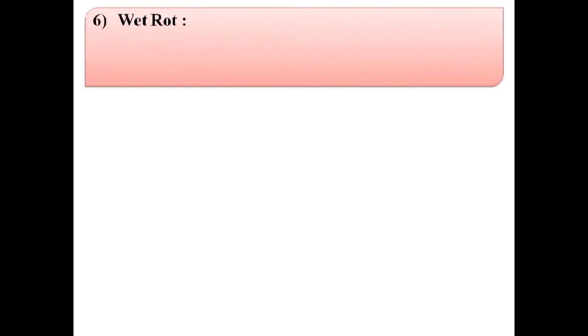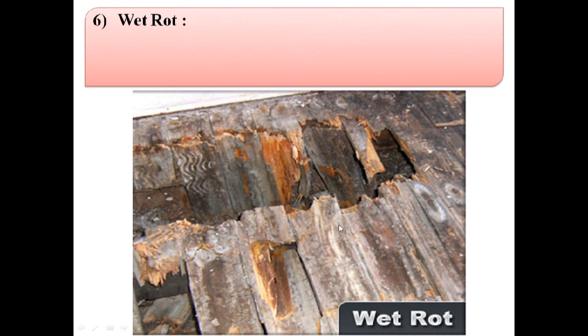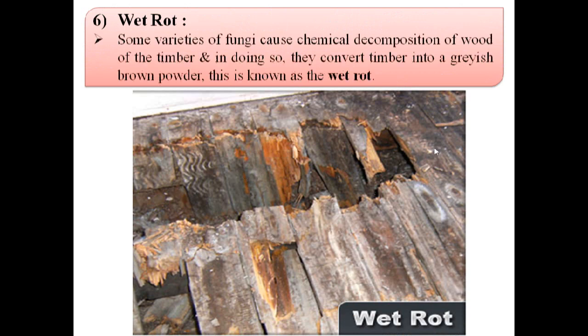Next defect due to fungi is wet rot. Some varieties of fungi cause chemical decomposition of wood of the timber and in doing so they convert timber into a greyish brown powder, and this is known as wet rot.